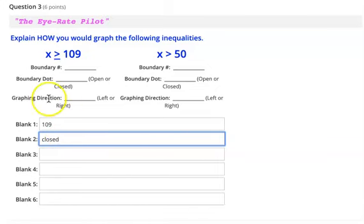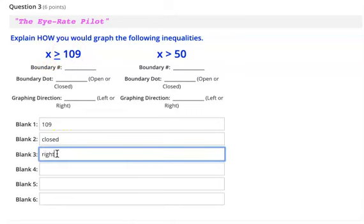Closed dot, solid dot, all the same thing. Graphing direction, which direction would your line go? It would go, let's see, greater than goes to the right. All right, that's about it. You would start at 109, you'd use a closed dot, and then you'd go to the right.